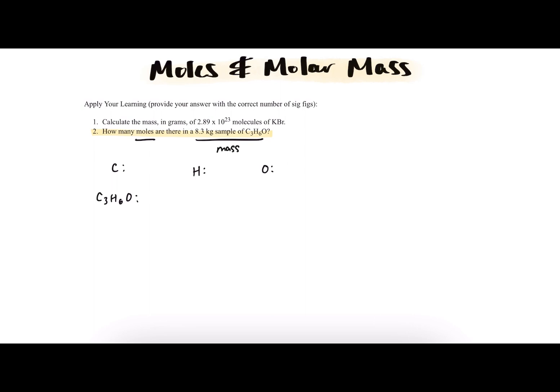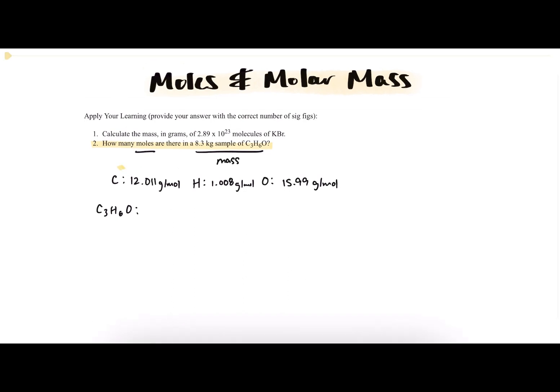So looking from the periodic table, the molar mass of carbon is written to be 12.011 grams per mole, hydrogen is 1.008 grams per mole, and oxygen is 15.99 grams per mole. I'll highlight these to make them more visible.